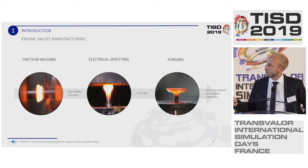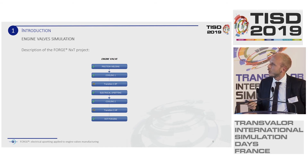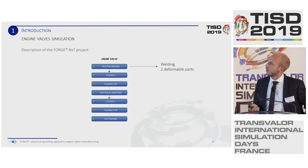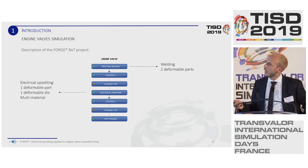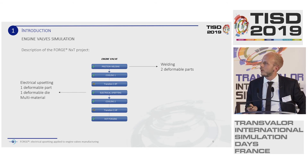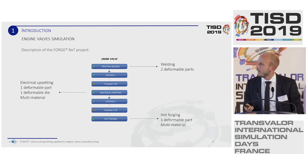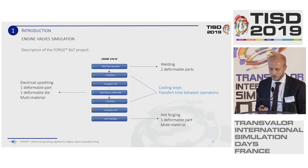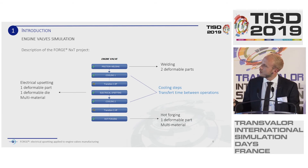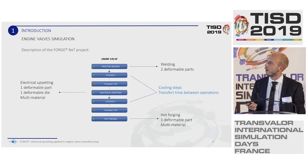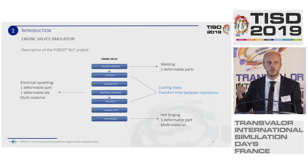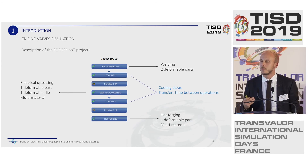For this study, we focus on these three main operations. Here is how the project looks in FORGE. You have five main operations: the first is a welding operation with two different parts, then the electrical upsetting with one deformable part, one deformable die, and the multi-material feature. At the end, you have the hot forging step with some intermediate cooling and transfer time between each step. As you can see, some steps are linked together — they are chained, which means the result from one step is automatically transferred to the next.